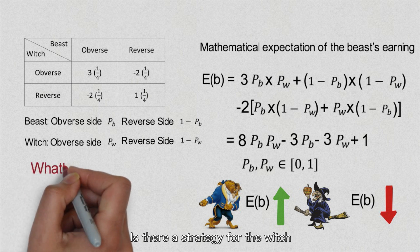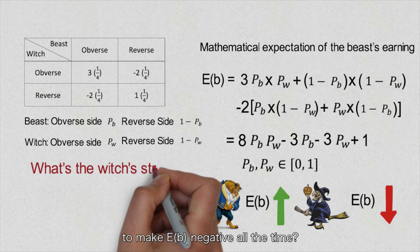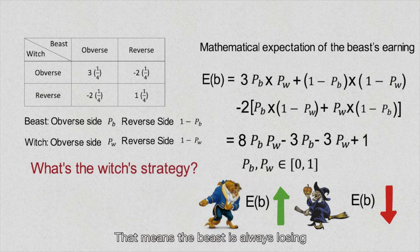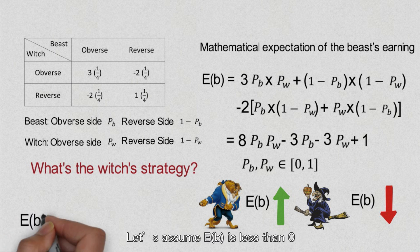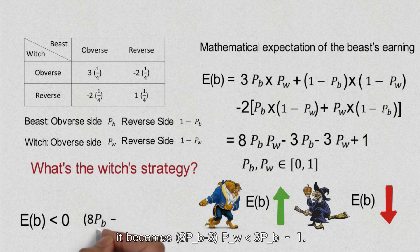Is there a strategy for the witch to make E(b) negative all the time? That means the beast is always losing. To study the witch strategy P_w, let's assume that E(b) is less than 0 and we can combine P_w in the expectation equation. After rearranging the inequality, it becomes 8P_b minus 3 times P_w is less than 3P_b minus 1.